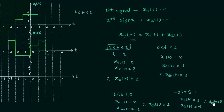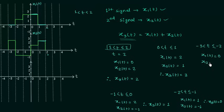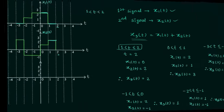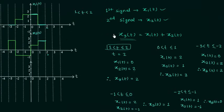Now we will find x3(t) when time t is less than or equal to minus 2 but greater than minus 3. Signal x1(t) is equal to 0, and signal x2(t) is equal to 2. Therefore signal x3(t) is equal to 2. Now we can easily plot the signal x3(t).